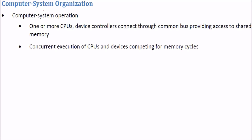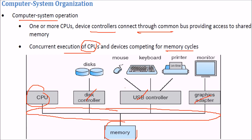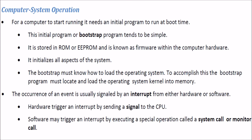To understand the operating system, it's important to understand computer organization. A computer system can have one or more CPUs and device controllers connected through a common bus, providing shared memory with concurrent CPU execution. When you start a computer, it needs a bootstrap program — a very small initial program stored in ROM or EEPROM, known as firmware. It initializes everything and then loads the operating system into main memory.